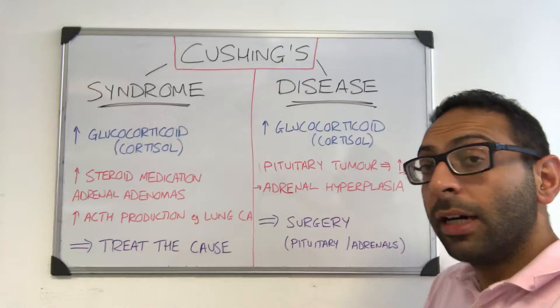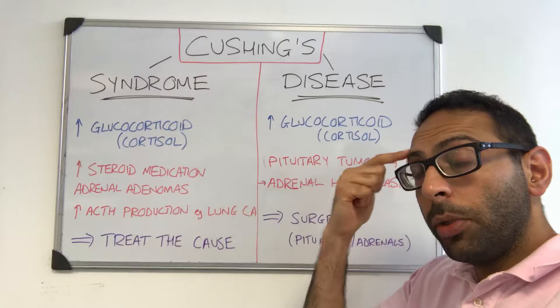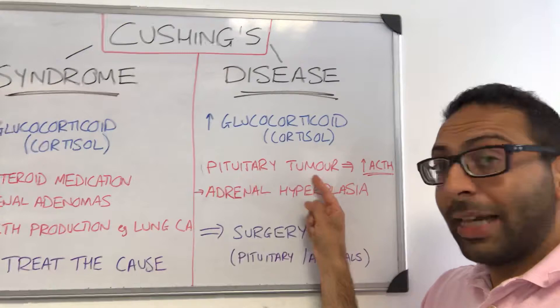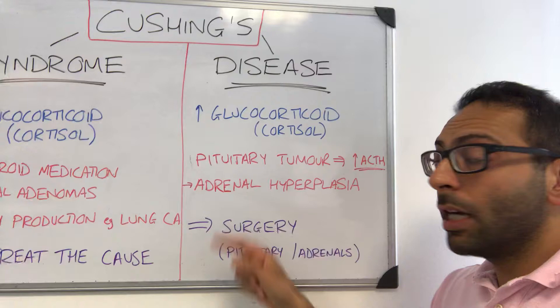Normally your pituitary gland releases ACTH, which causes your adrenals to pump out glucocorticoid. In Cushing's disease, it's a very specific problem: you have a tumor in the pituitary, like an adenoma, that's pumping out way too much ACTH. This causes hyperplasia of the adrenal glands, which pumps out the excess glucocorticoid.